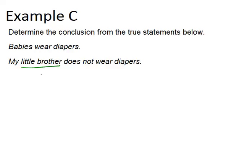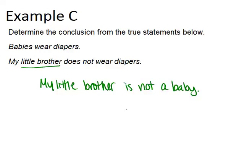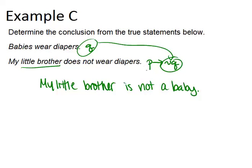The correct conclusion you could draw is: my little brother is not a baby, because if he was a baby, then he would be wearing diapers, but he doesn't wear diapers. Let's think about this in symbolic notation. Let's say babies wear diapers is Q, and the second statement — my little brother does not wear diapers — is like saying if P, then not Q. So if we know if P then not Q is true, and Q is true, then the logical conclusion is not P. This is actually the law of contrapositive.